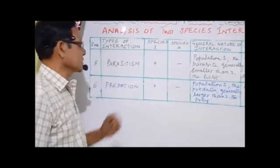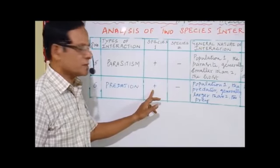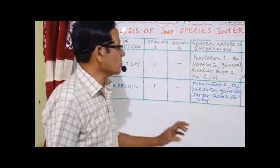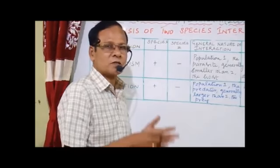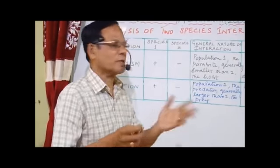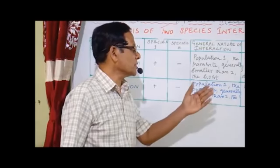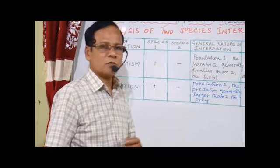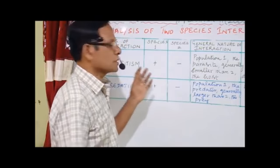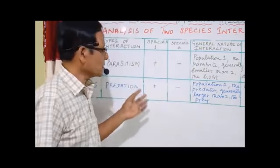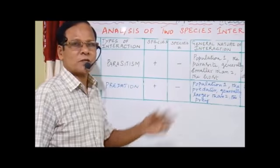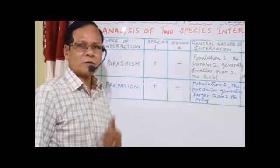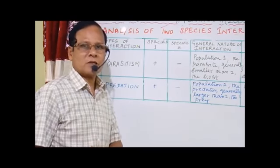Next one, predation: there is a gain for one partner — the predator — and there is a loss for another partner — the prey. Population one, the predator, is normally larger than population two, the prey. We have already seen lion predating on deer, where the lion is the predator and the deer is the prey. That's all about the various interactions between organisms. With that I conclude the lesson on organisms and populations. We have to go to the next lesson, which is biodiversity and conservation. We will see that in the next class. Till then, goodbye. Thank you.